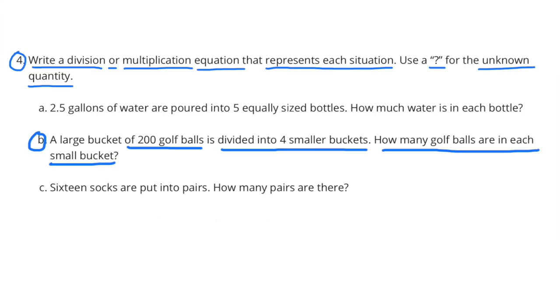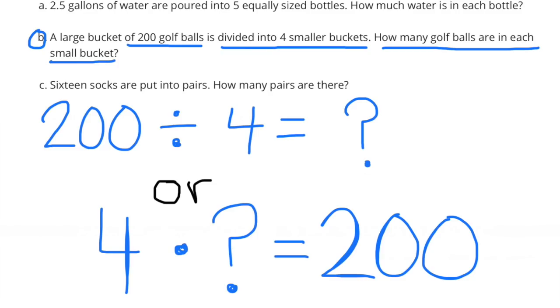B. A large bucket of 200 golf balls is divided into 4 smaller buckets. How many golf balls are in each small bucket? 200 divided by 4 equals what number? Or 4 times what number equals 200?